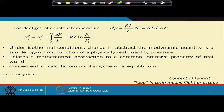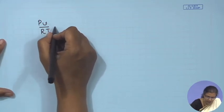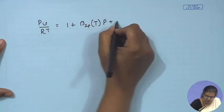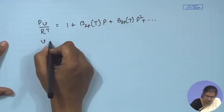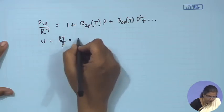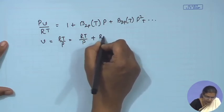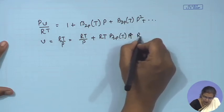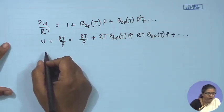We now consider what happens for a real gas obeying the virial equation of state. The virial equation written in pressure-explicit form has constants that are functions of temperature only. From this we can define V as RT/p, and multiplying throughout we get V = RT/p + RT·B₂(T) + RT·B₃(T)·p + ... Now we compute dμ, which at constant temperature equals V dp.